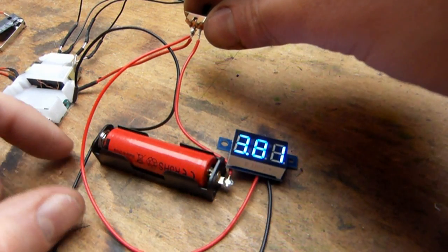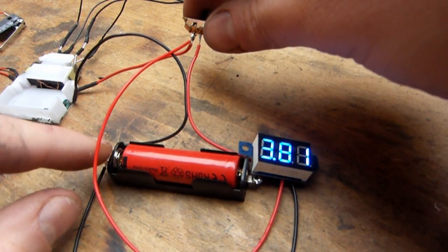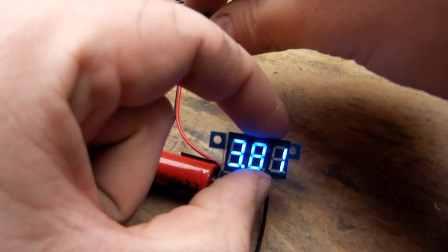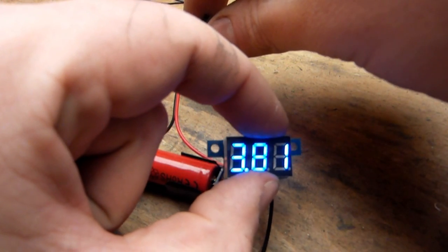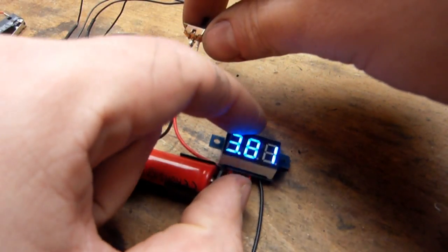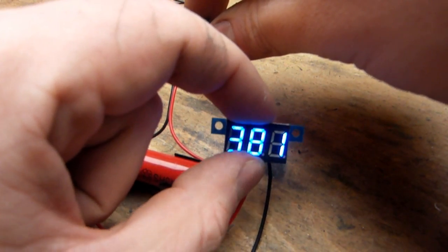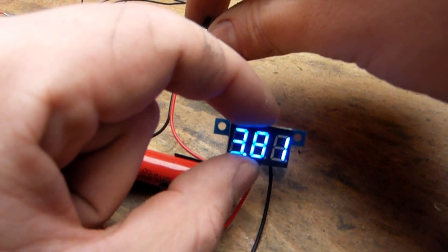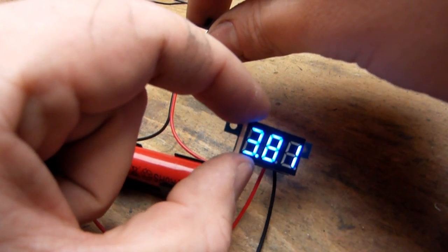and the other end to the minus of the battery and then you have a cool voltage display which will look even better on one of the projects I'm going to make with this tiny ignition.